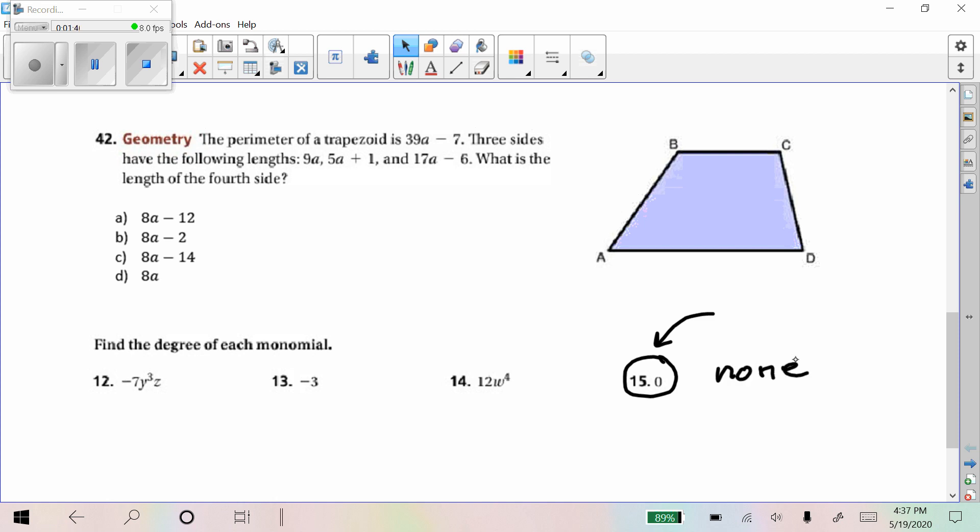That zero is a special case. All other constants like the number three or the number 49, their degree zero because you can write those as x to the zero is actually one. So three times one is the same as three, right? So other constants like this one here are zero degree.